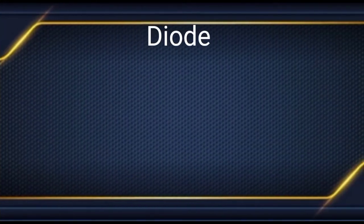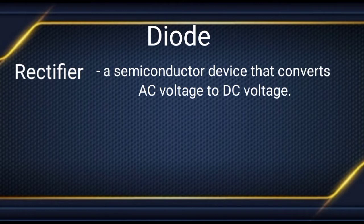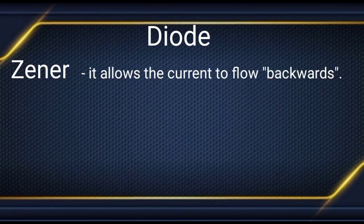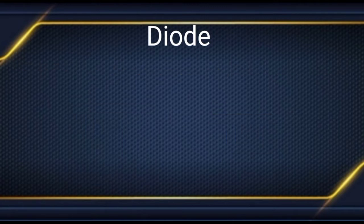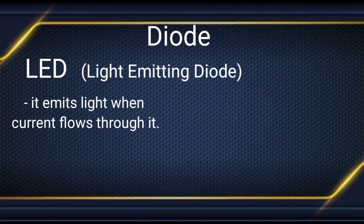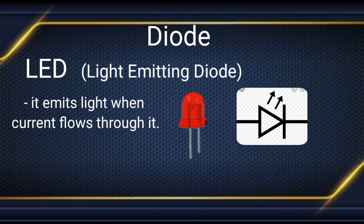Next, we have the diode — specifically the rectifier diode. A rectifier diode is a semiconductor device that converts alternating current to direct current. This is the actual appearance and the symbol. Another type of diode is the component usually found in the remote control of our television and radio sets.